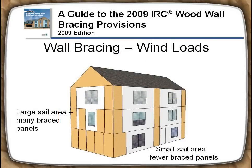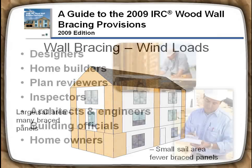New to the 2009 IRC, wind bracing development considers how far apart braced wall lines are. Perpendicular walls act as a sail resisting wind pressures, while the braced wall lines resist the movement of the perpendicular or sail wall. In the figure, the short wall with a larger sail requires more braced wall panels than the longer wall.